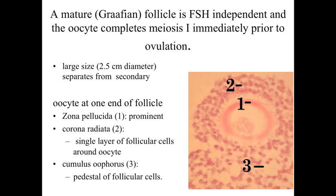A mature or Graafian follicle is one that becomes FSH-independent. As those levels of follicle-stimulating hormone decrease, only one — normally only one — of those 10 to 20 ovarian follicles that started is going to be able to become FSH-independent and develop on its own. What's going to happen when they become FSH-independent is we're going to start to see the oocyte complete meiosis I, normally only one follicle doing this, immediately prior to ovulation. You're going to be looking at an ovarian follicle that's going to be very, very large — about 2.5 centimeters in diameter — basically taking up the majority of the size of the ovary.